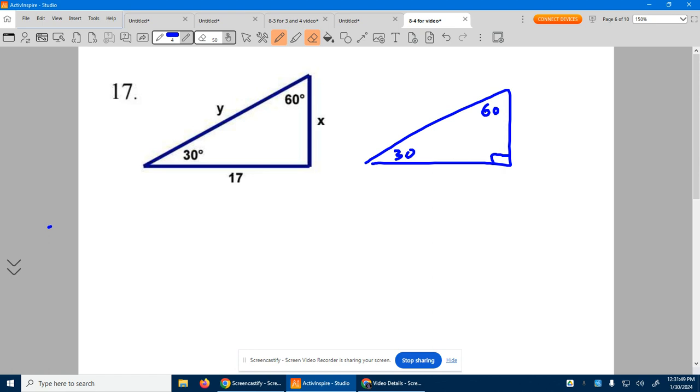We know everything is based off of the short side, the side across from the 30. Let's just call it X. The hypotenuse will be twice as big, and this guy will be root 3 times as large.